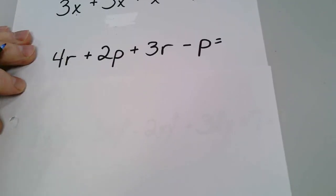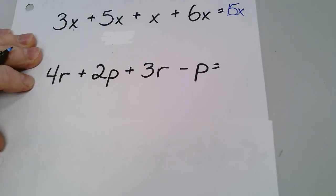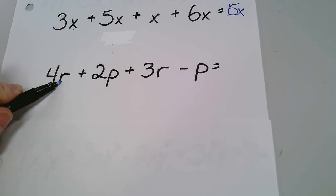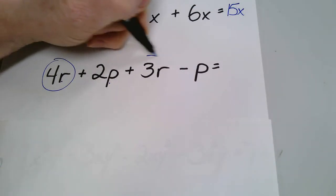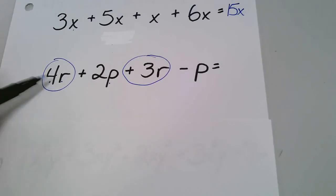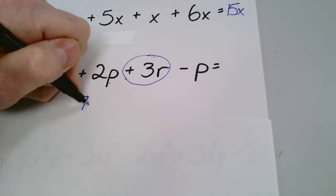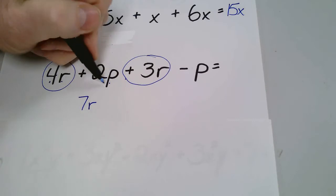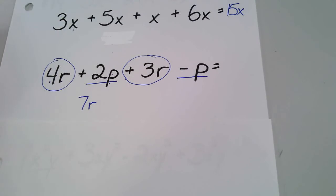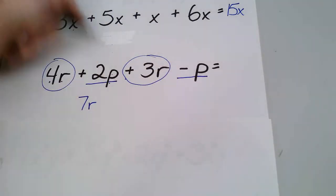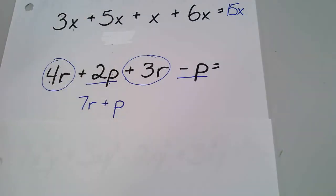Look at another one. In this one, we have two different family names. We've got the r family and the p family. So let's start by looking at all the r's. We have four here, and we add three more r's for a total of seven r's. We have two positive p's, and we take one p away from that. So if we have two, take away one p, we're just left with one positive p. And that's our answer.